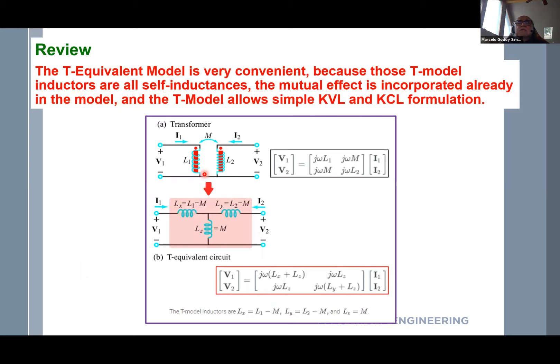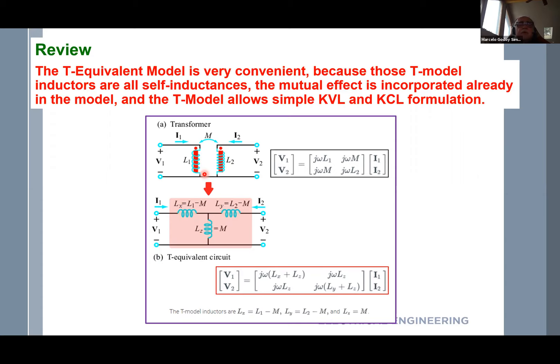We also discussed last class an equivalent model called the T model, also called the Y model because a T with its two branches made diagonal looks like a Y. We also have a model called pi, because it has two branches and a third inductance arranged similarly to a delta. Most of the time we use the T equivalent model because it makes writing KVL and KCL very straightforward.